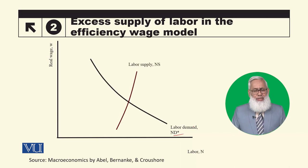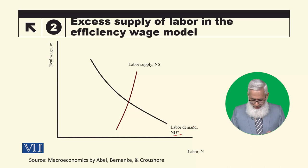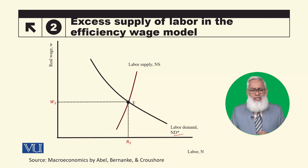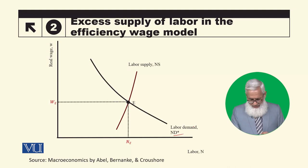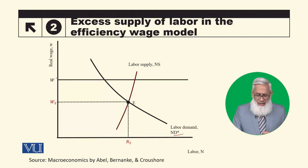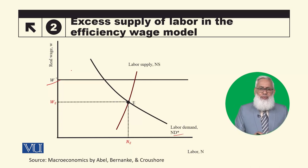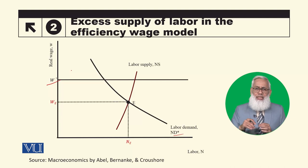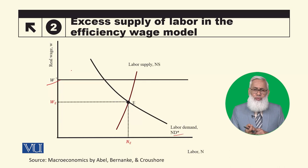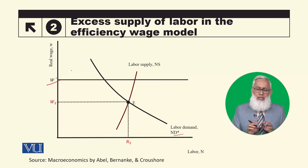The labor supply curve is positively sloped — higher wages mean more workers will supply labor. The equilibrium wage where market demand and supply meet implies no unemployment. However, firms offer wages at the efficiency wage level. The efficiency wage is determined by the effort curve from the previous module, where maximum effort corresponds to the efficiency wage w*.